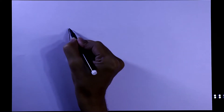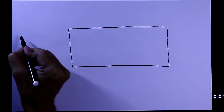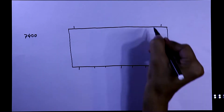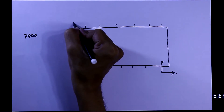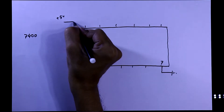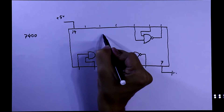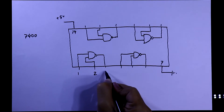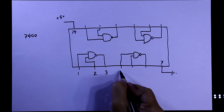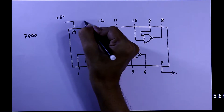Now we'll see the practical circuit. Before that we have to see the pin diagram of IC 7400, which is a NAND gate IC. It has 14 pins. Pin number 7 should be connected to GND and pin number 14 should be connected to +5V. It has 4 NAND gates. Pins 1 and 2 are the inputs and pin 3 is the output of the first NAND gate, and similarly for the other NAND gates.